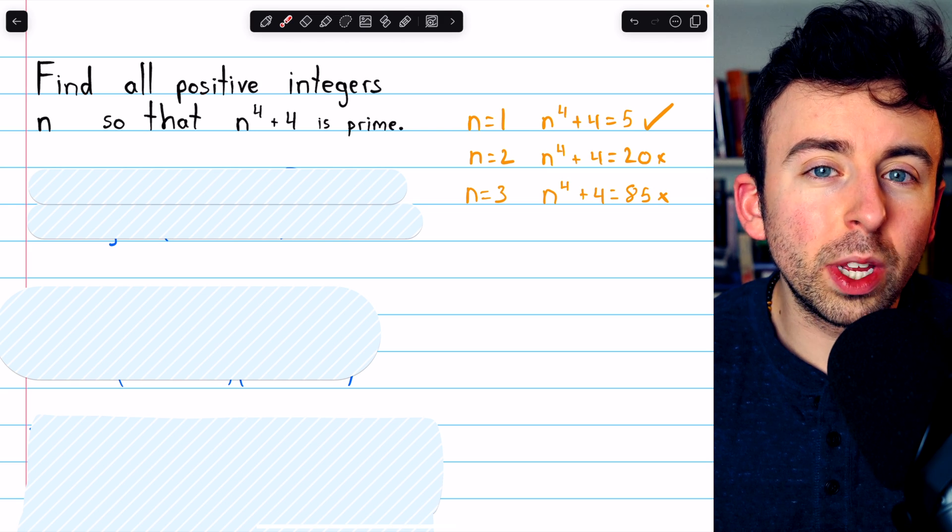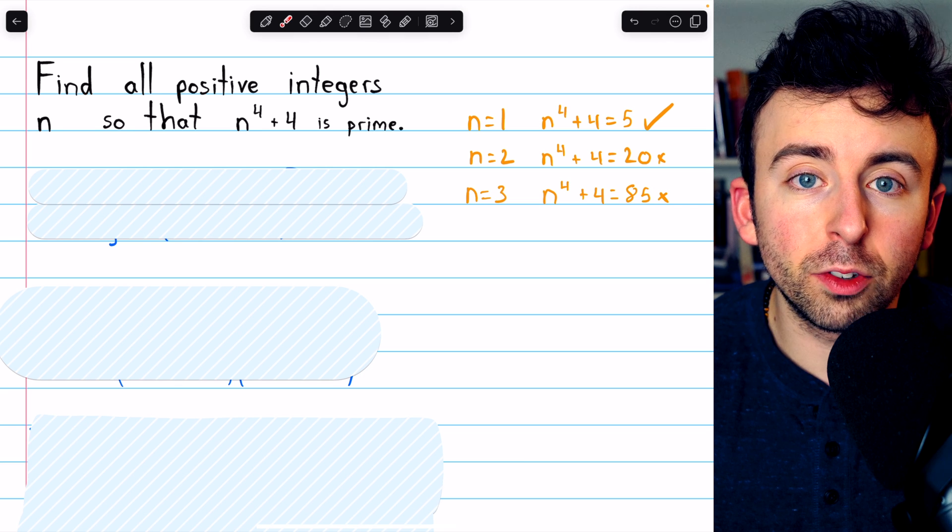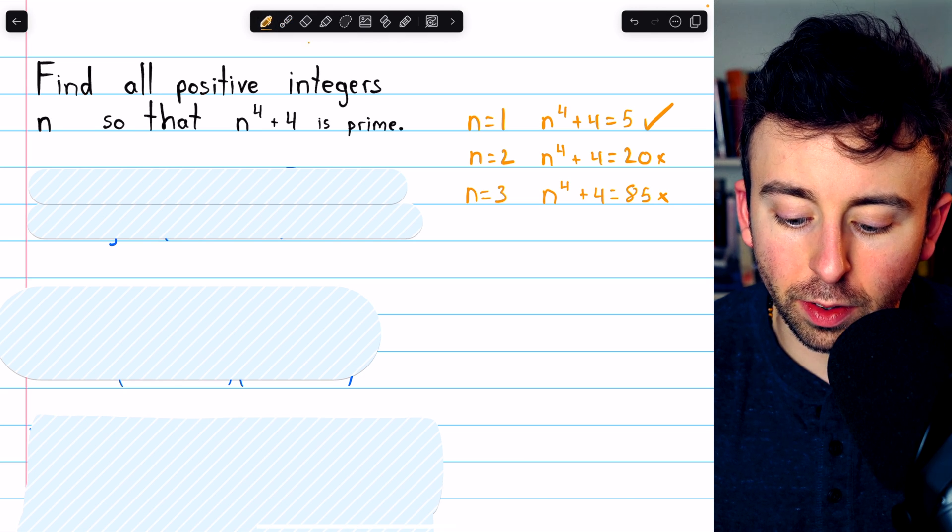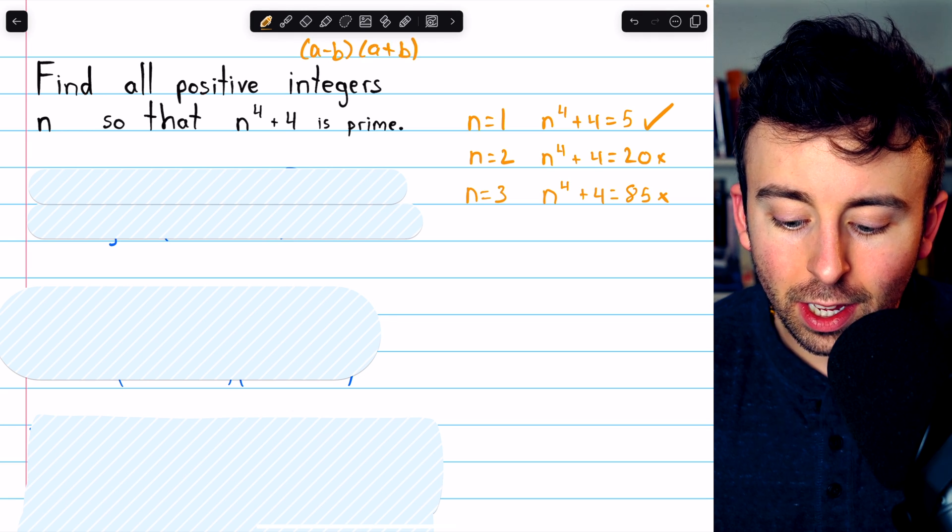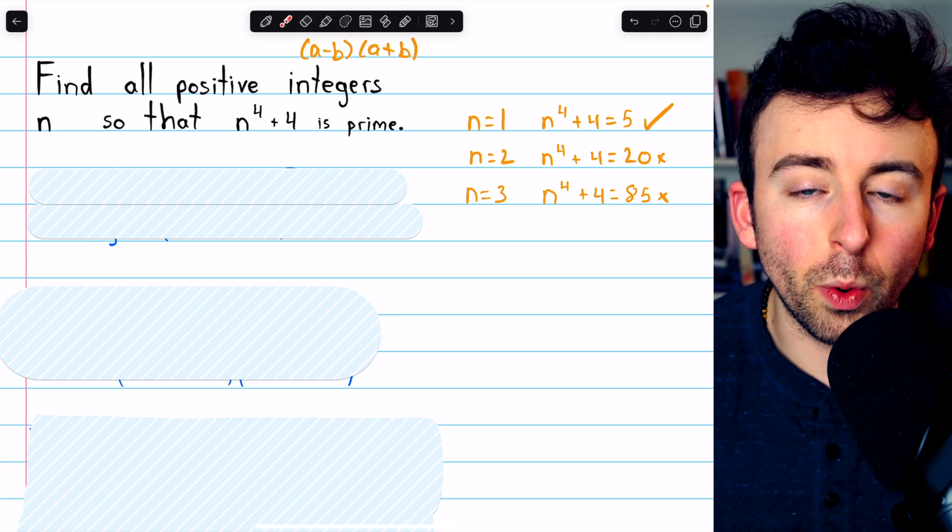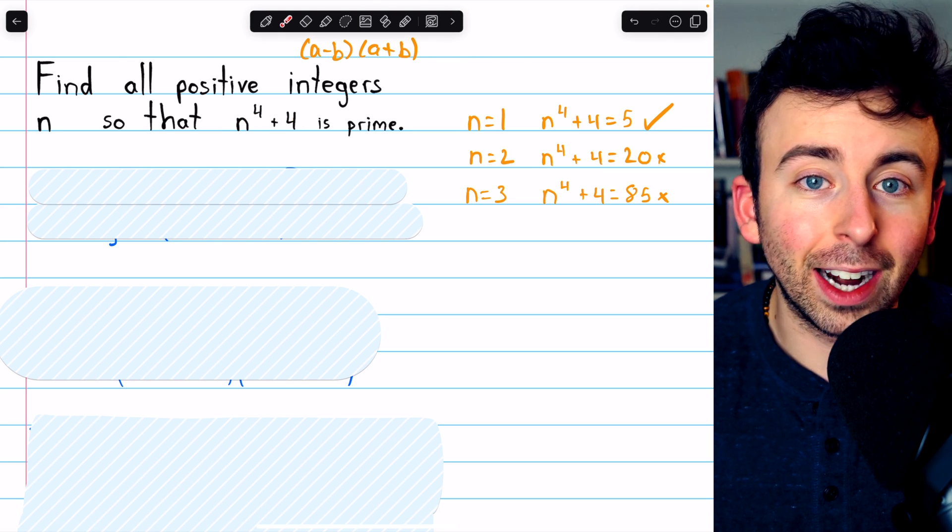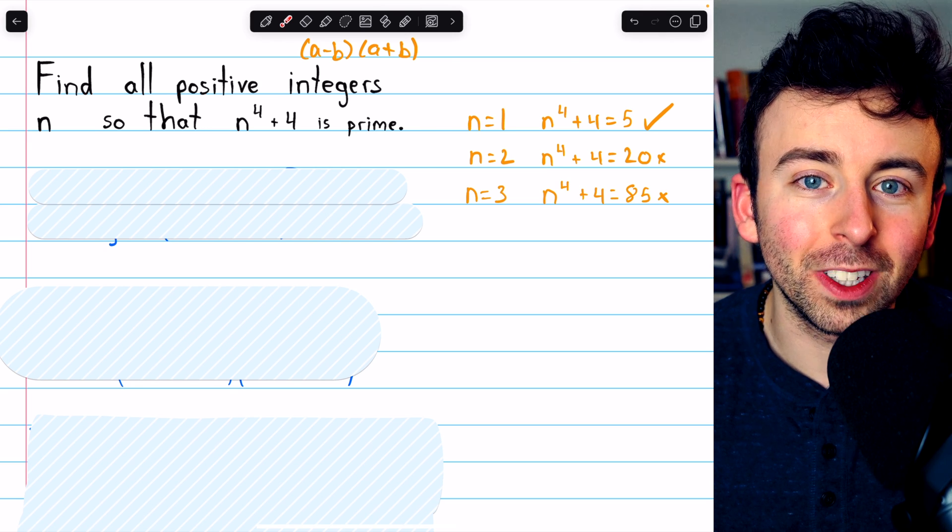This is one of those situations where we really wish there was a nice factorization for a sum of squares. There is a well-known factorization for a difference of squares, of course, a minus b times a plus b, but in this situation, we have a sum of squares, n squared squared plus 2 squared, and there's not a factorization for that, except in some special cases.